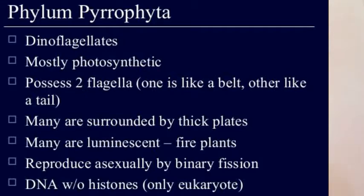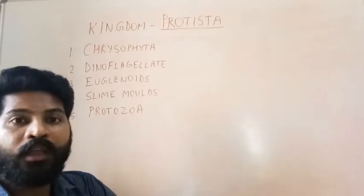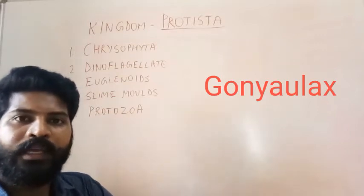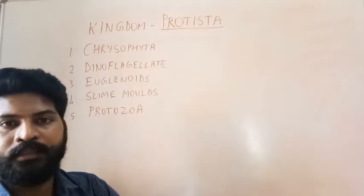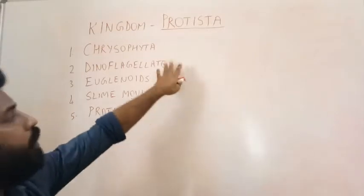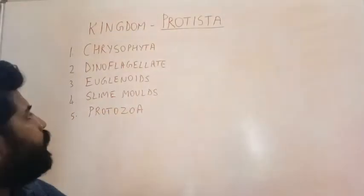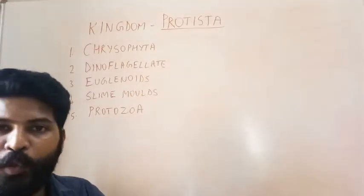Dinoflagellates are known to show bioluminescence — meaning they can emit their own light. They are also called fire plants. They reproduce asexually by binary fission. Even though these are eukaryotes, the DNA lacks histones. Histone proteins are absent in dinoflagellates. Organisms like Gonyaulax are red in color; when their numbers increase in oceans it appears to color the entire sea, which is called a red tide.